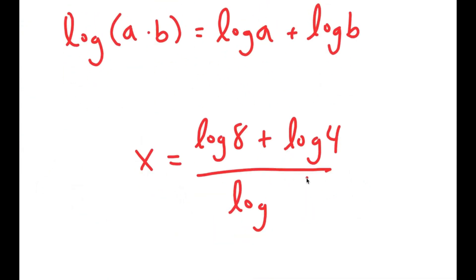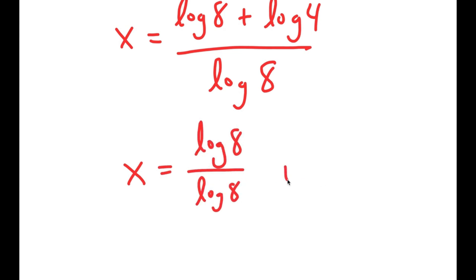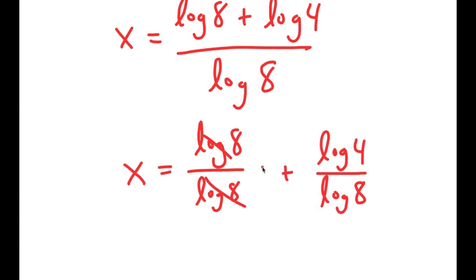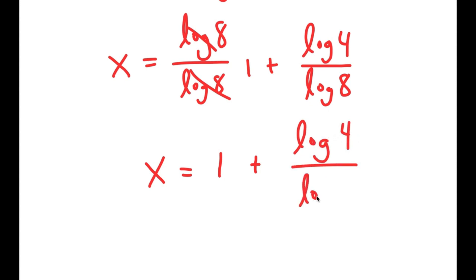Sorry — I have this over log of 8. This turns into log 8 over log 8 plus log 4 over log 8. So now these two cancel out to get 1. So I get x is equal to 1 plus log of 4 over log of 8.